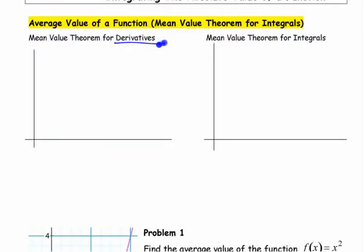Mean value theorem for derivatives. You could just cross it out. Mean value theorem for derivatives. It was this, right? If you had some kind of a function here like this, and you started here and you ended here, and this was a and this was b.